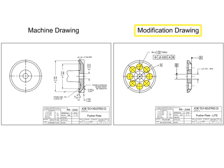Modification drawings also incorporate mandatory changes — for example, safety, reliability, or application extension into existing delivered equipment. This type of drawing can also be referred to as a make-from drawing.